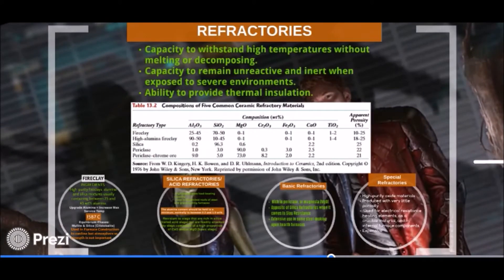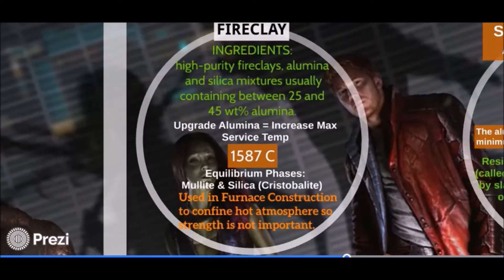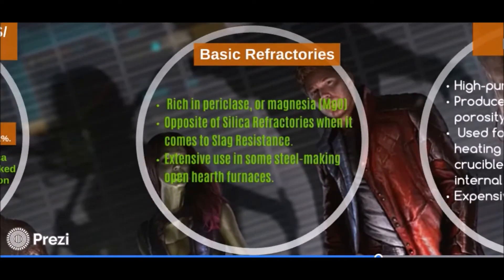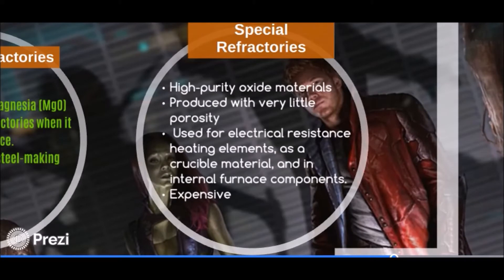We have refractories, which have the capacity to withstand high temperatures without melting or decomposing, remain unreactive or inert when exposed to severe environments, and provide thermal insulation. Fire clay is used in furnace construction to confine hot atmosphere, so strength is not that important. Silica refractories are called acid refractories — used in arc furnaces and glass making, resistant to silica slags but not basic slags. Basic refractories are the exact opposite of silica refractories. Special refractories are high-purity oxide materials produced with very little porosity, but are also expensive.